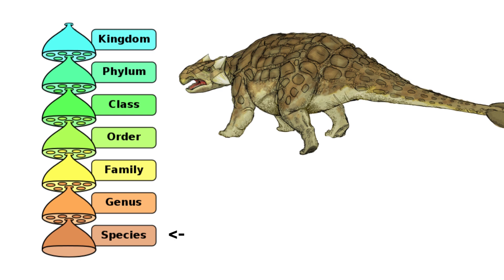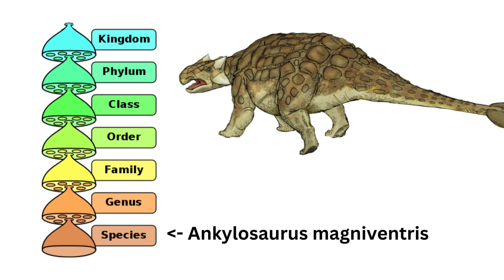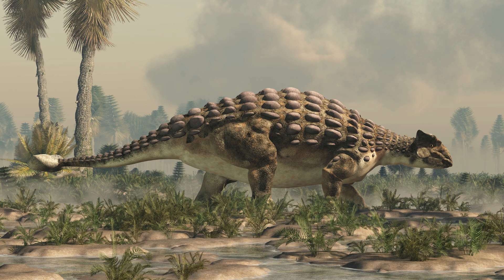Finally, we arrive at the species level, where we gain the most specific information about an animal. Ankylosaurus magnaventris is the specific species name. The species represents a particular type of organism within a genus. Ankylosaurus magnaventris is known for its massive size and well-developed tail club.